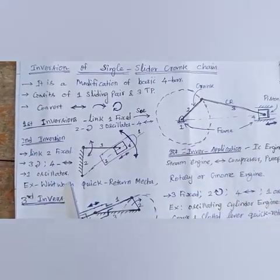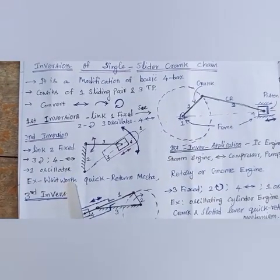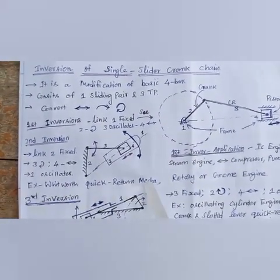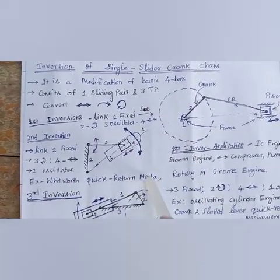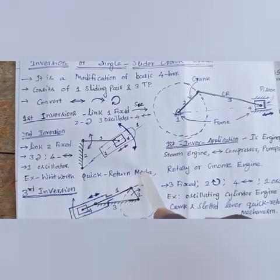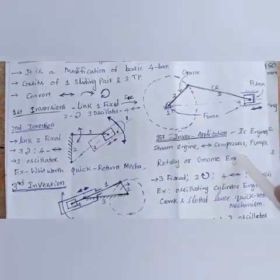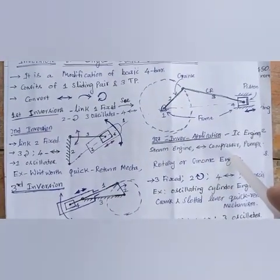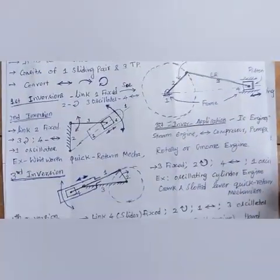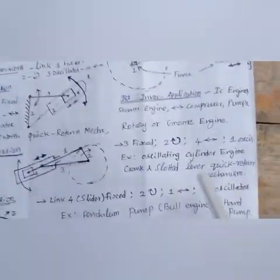The practical application of the second inversion is the Whitworth quick return motion mechanism and the rotary or gnome engine. Now the third inversion.